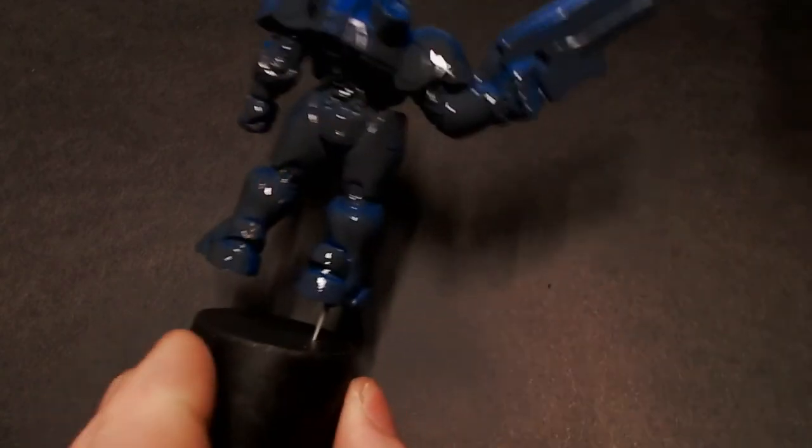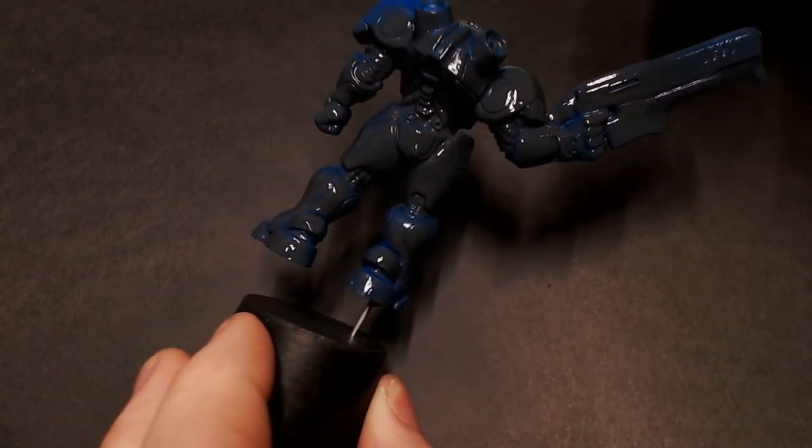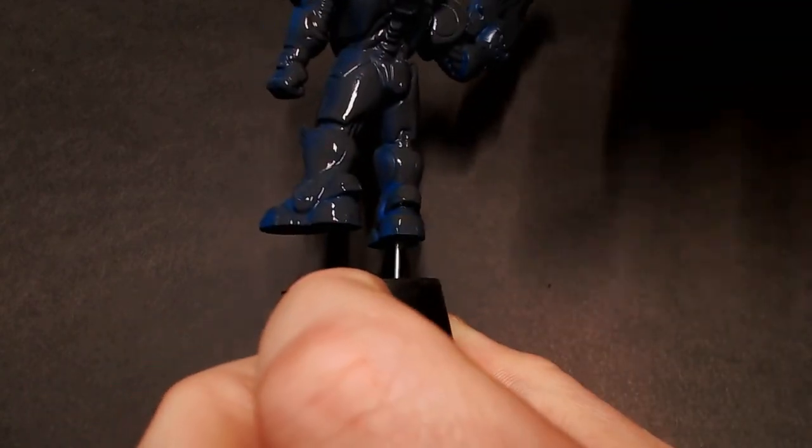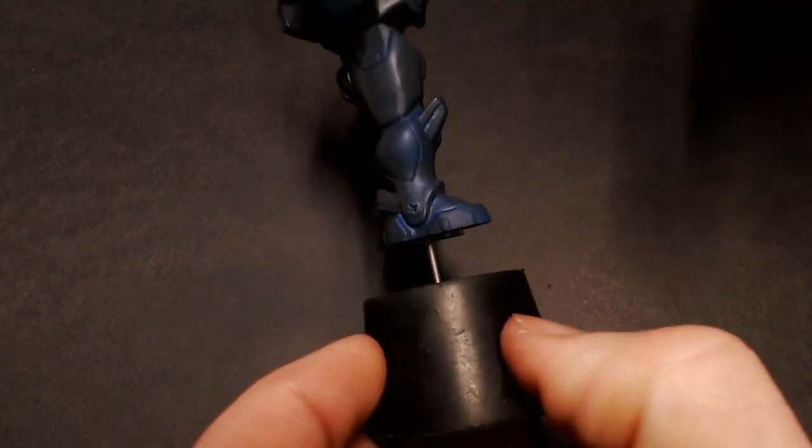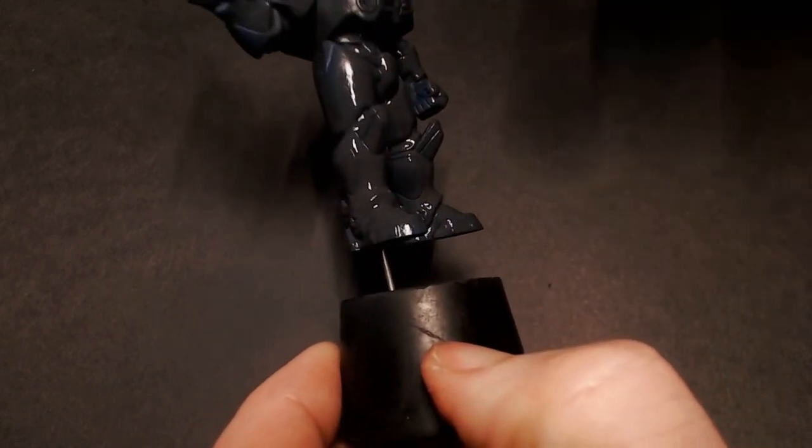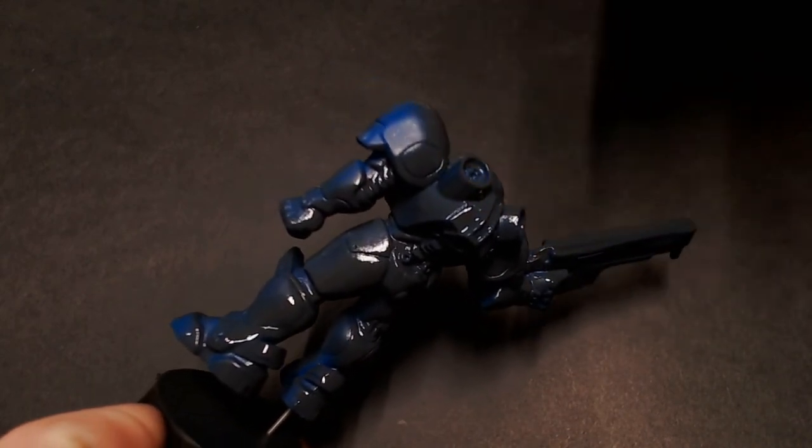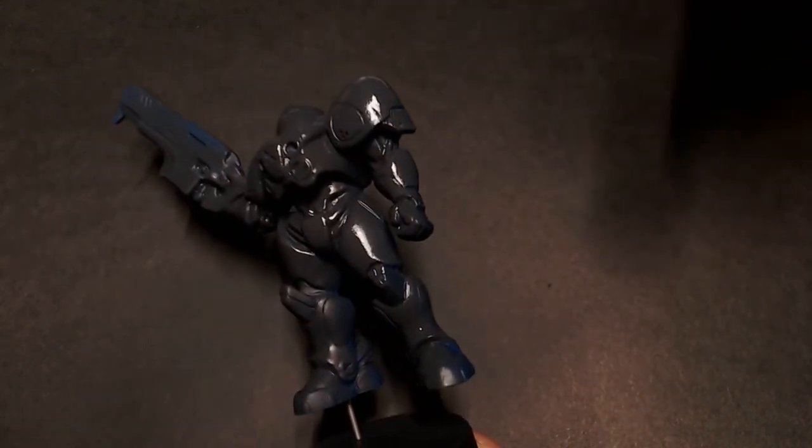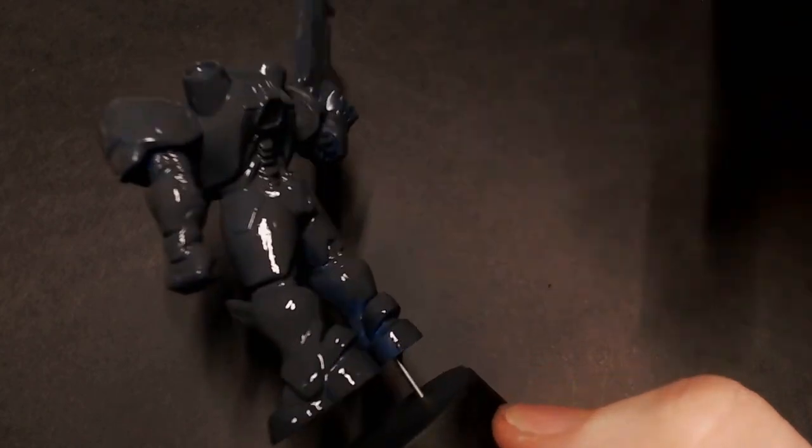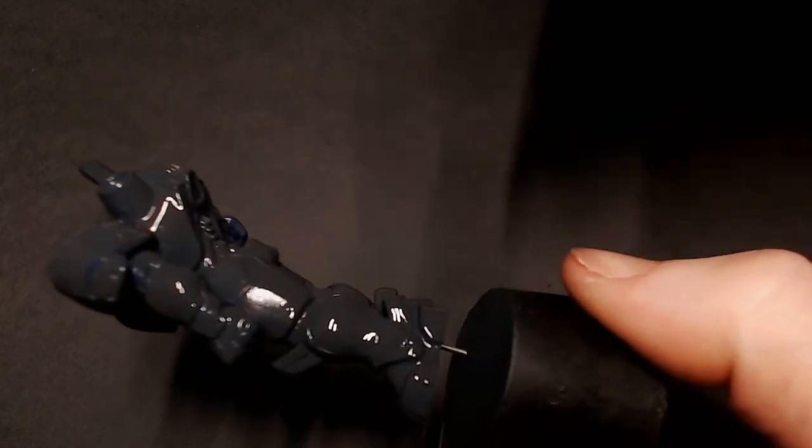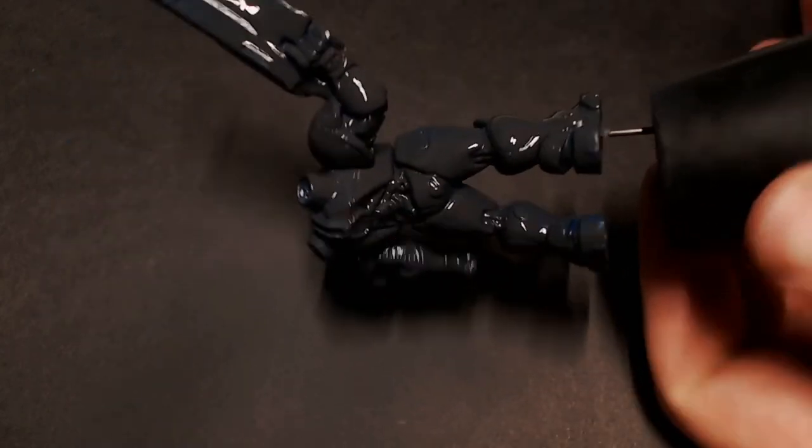One thing that can kind of help this process especially with some of these models that aren't normal miniature grade plastic or resin is taking some rubbing alcohol on like a paper towel and just giving them a quick rub down to get any skin oil or any other stuff that might be on there that's going to make that paint not stick very well. That can help quite a bit.